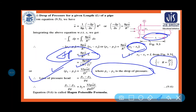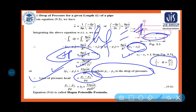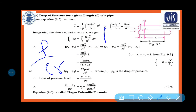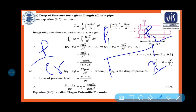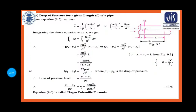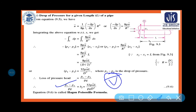For the loss of pressure head, hf = (p₁ - p₂)/ρg, since p/ρg is the pressure head. Setting this equal to the pressure drop formula: hf = 32μvL/(ρgd²). This equation is known as the Hagen-Poiseuille formula.